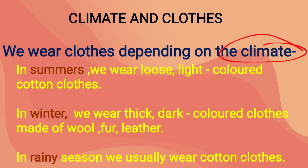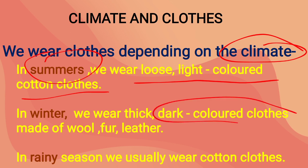In summers we wear loose, light-color cotton clothes. In winters we wear dark-color clothes made up of wool, fur, and leather. In the rainy season we usually wear cotton clothes.